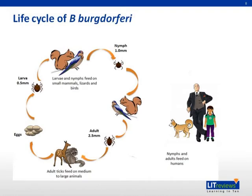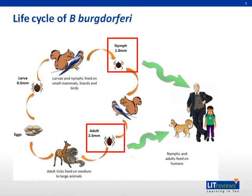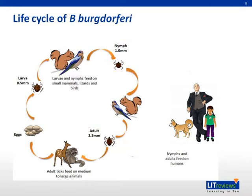This slide shows the life cycle of Borrelia burgdorferi. As mentioned, Ixodes nymphs are the ones that transmit the bacteria to humans, which are accidental hosts. The life cycle involves many rodents and large mammals.